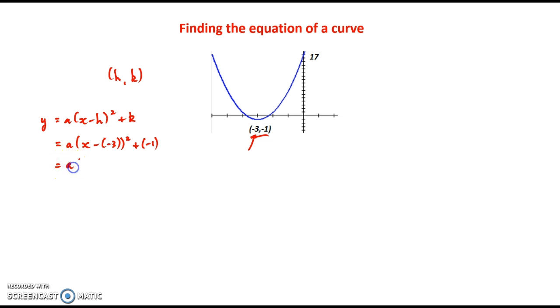Now we will just tidy up some of those signs. If we subtract a negative that is obviously going to give us a positive, and adding a negative will give us a negative there. We are already a fair way there towards writing the equation. We have just got this a value that we have got to determine.